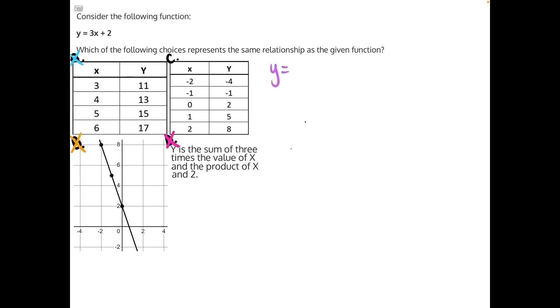y is equal to 3 times negative 2, plus 2. That will give us y is equal to 3 times negative 2 is negative 6, plus 2 will give us negative 4. So that first one is correct.